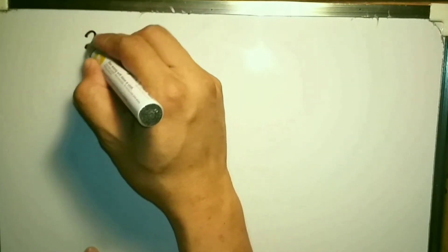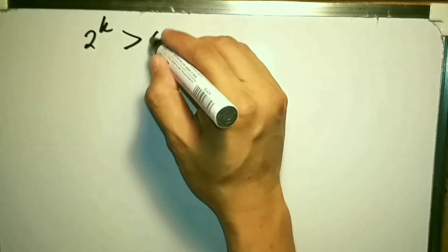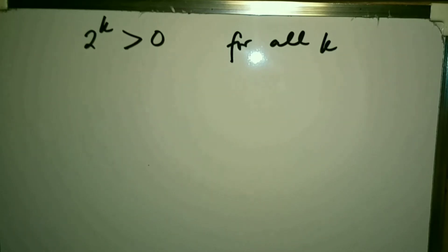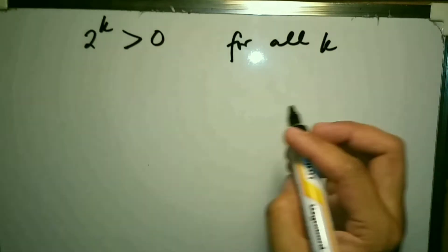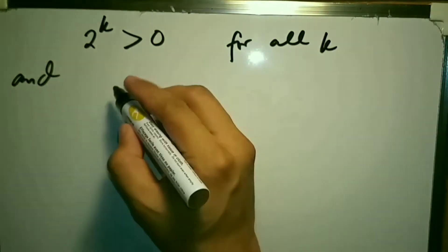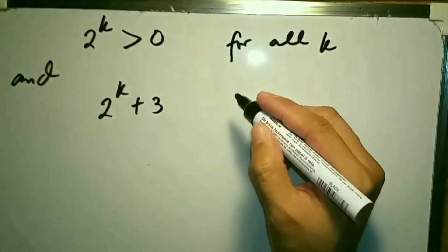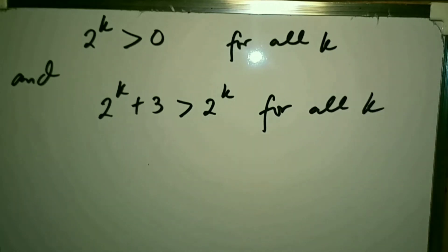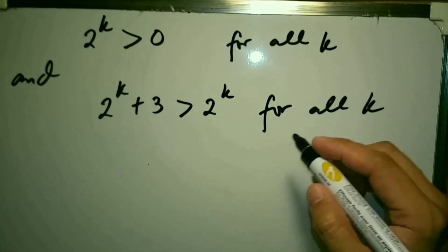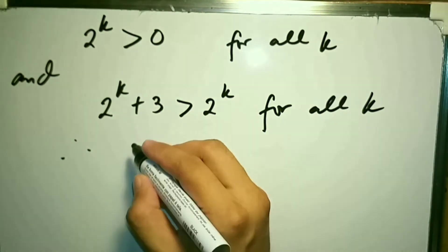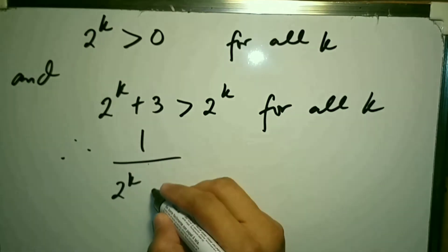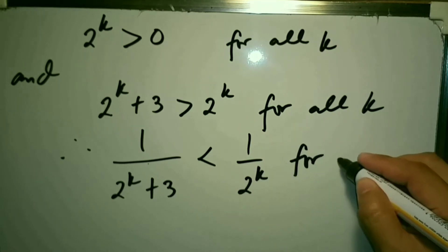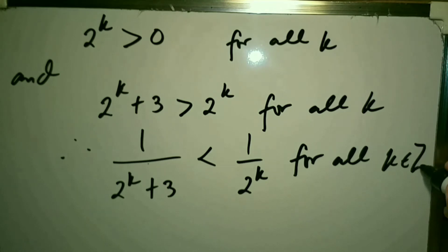We know that 2^k > 0 for all k, and 2^k + 3 > 2^k for all k. From this statement we can conclude that 1/(2^k + 3) < 1/2^k for all k in the positive integers.